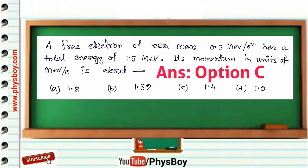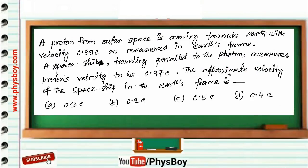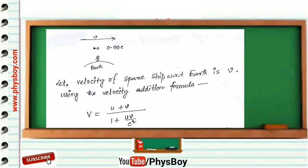Next question: a proton from outer space is moving toward the earth with velocity 0.99c as measured in Earth's frame. A spaceship traveling parallel to the proton measures the proton's velocity to be 0.97c. The approximate velocity of the spaceship in Earth's frame is: Option A: 0.3c, Option B: 0.2c, Option C: 0.5c, Option D: 0.4c. Here V is the velocity of the spaceship with respect to Earth. The proton's velocity with respect to the spaceship is 0.97c, and with respect to Earth is 0.99c.